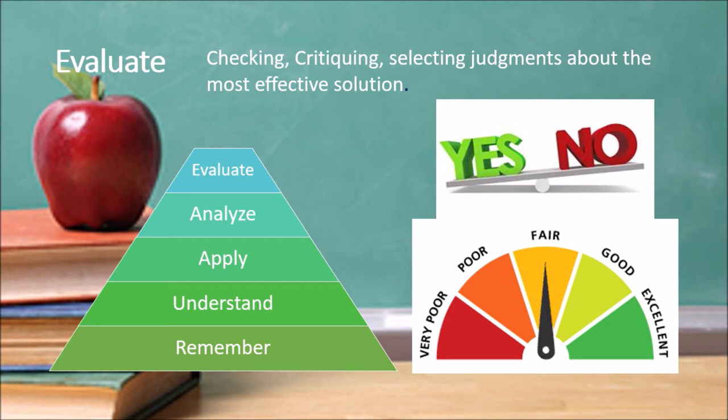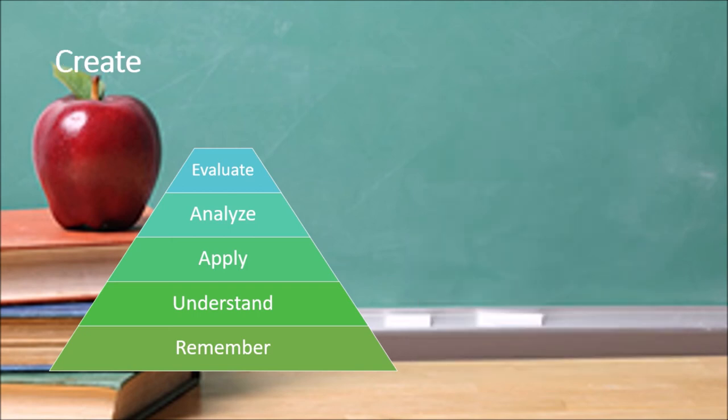The next level is 'evaluate.' We must be able to evaluate knowledge and outcomes — for example, giving a grade from very poor to excellent. If it is a decision, we can take a yes-or-no decision after evaluating. The abilities involved include checking, critiquing, selecting, and making judgments about the most efficient solution.